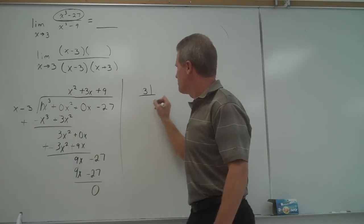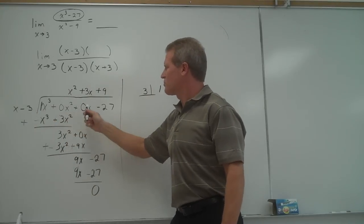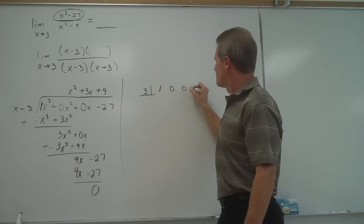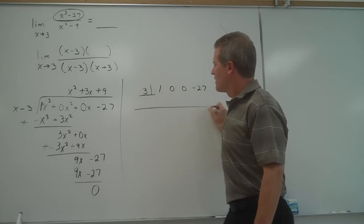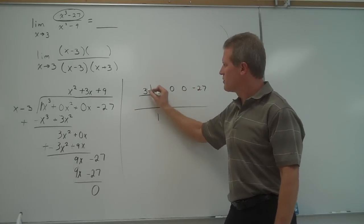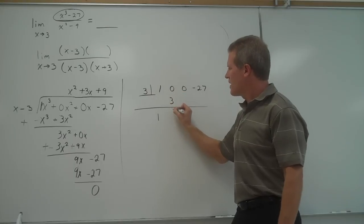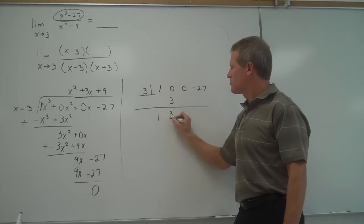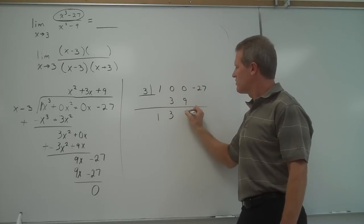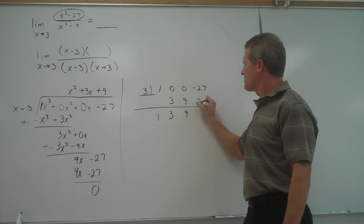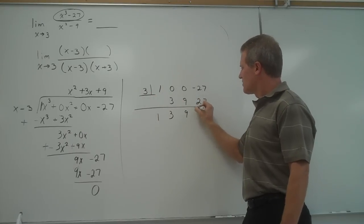And you take the coefficients of what you're dividing. So, 1x cubed, 0x squared, 0x minus 27. You bring down the 1. 3 times 1 is 3. You add those quantities. 3 times 3 is 9. You add those. 3 times 9 is 27. You add the remainder of 0.